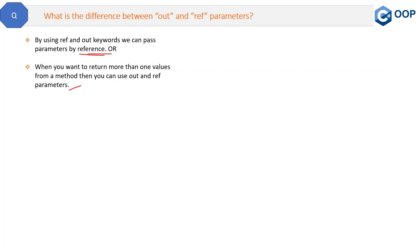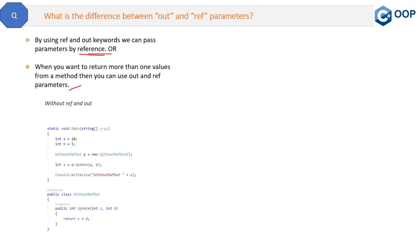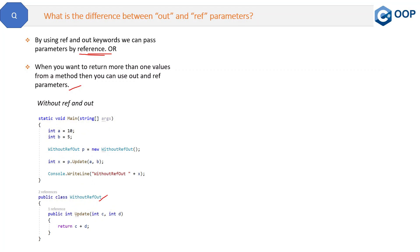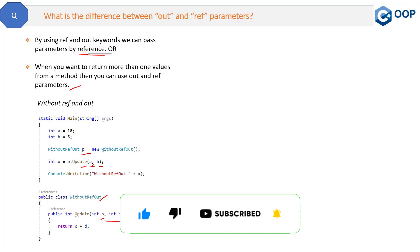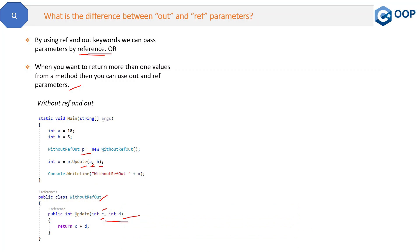Let's understand what passing parameters by reference means. Here we have a class without ref or out — it uses simple parameters. In the update method, when you create an object and call it with normal parameters a and b, those parameters are passed by value — not by reference. The parameters a and c have different addresses in memory, so they are not related. Their values may be the same, but their addresses are different.